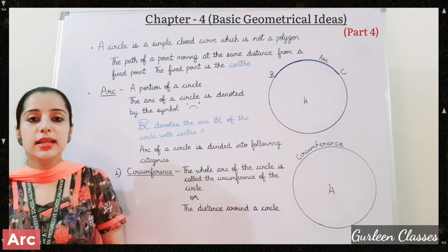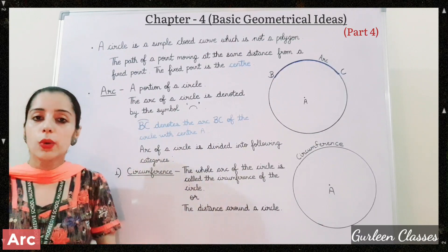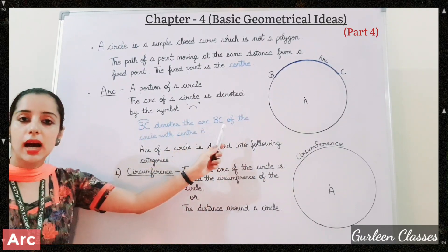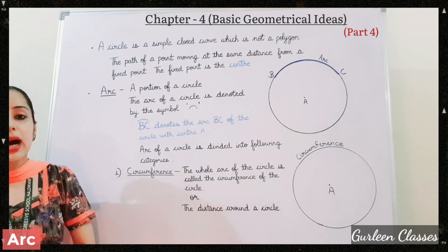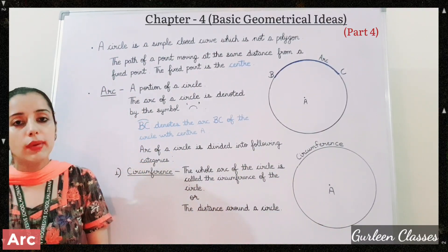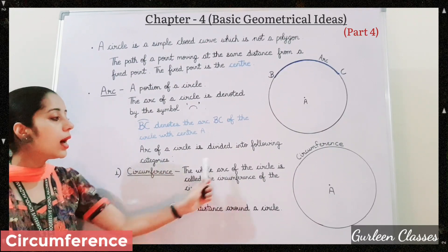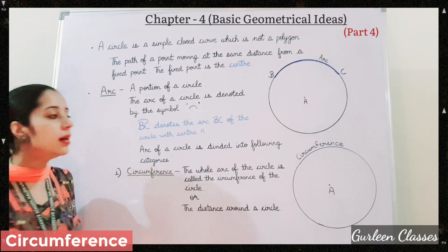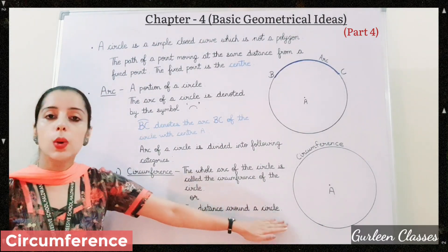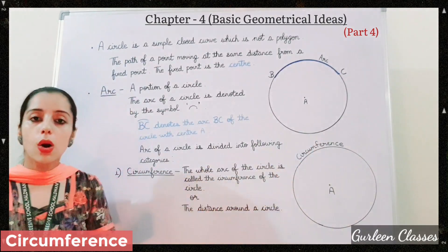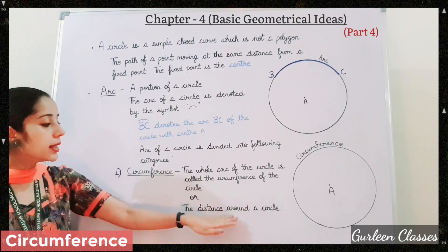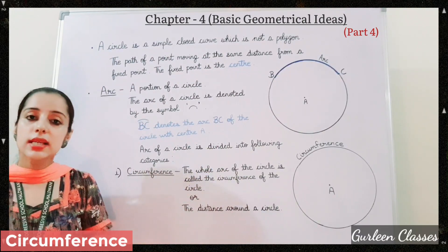Next, arc. An arc is a portion of a circle. The arc of a circle is denoted by a special symbol. In this circle, arc BC denotes the arc of the circle with center A — a small portion of the circle. Arc of a circle is divided into categories. Number 1: Circumference — the whole arc of the circle is called the circumference of the circle, or the distance around the circle, or the length of the boundary. There are different definitions we can use.